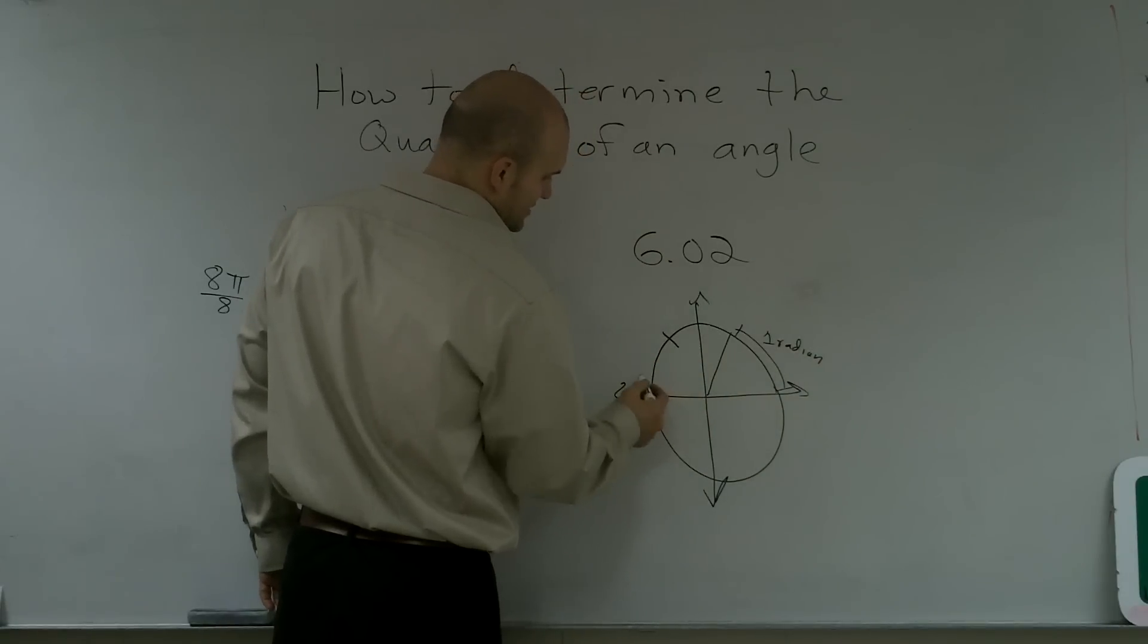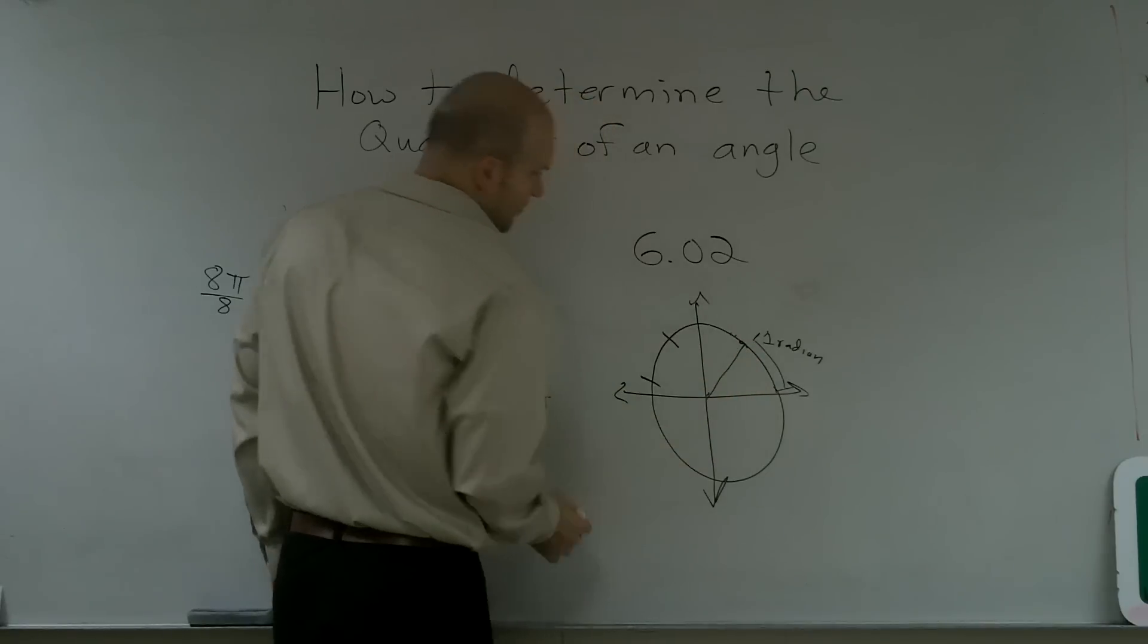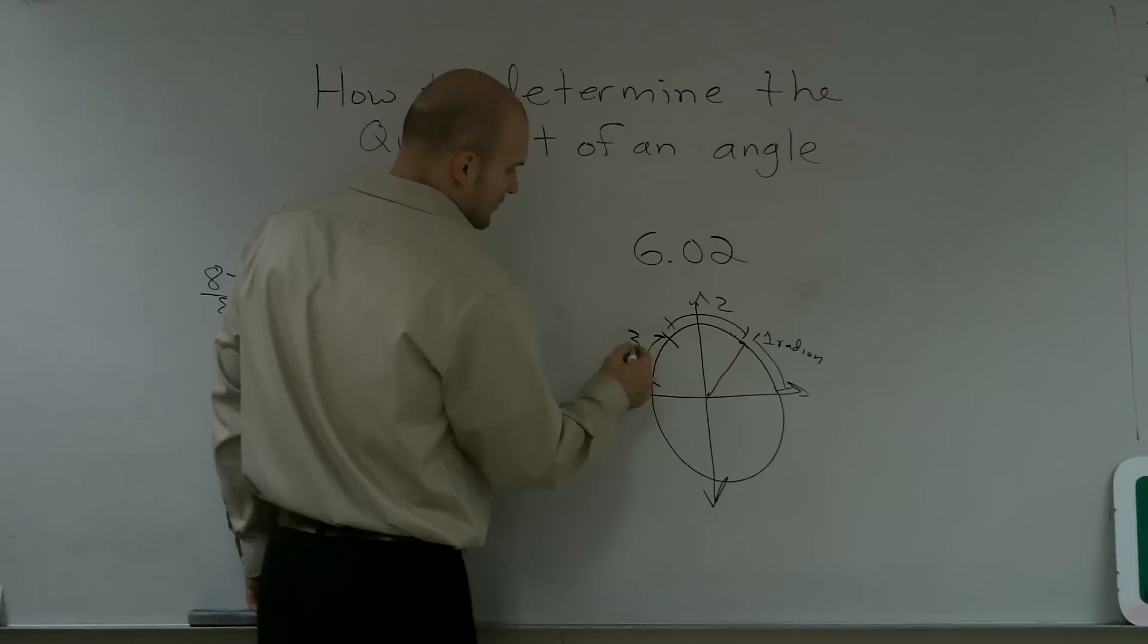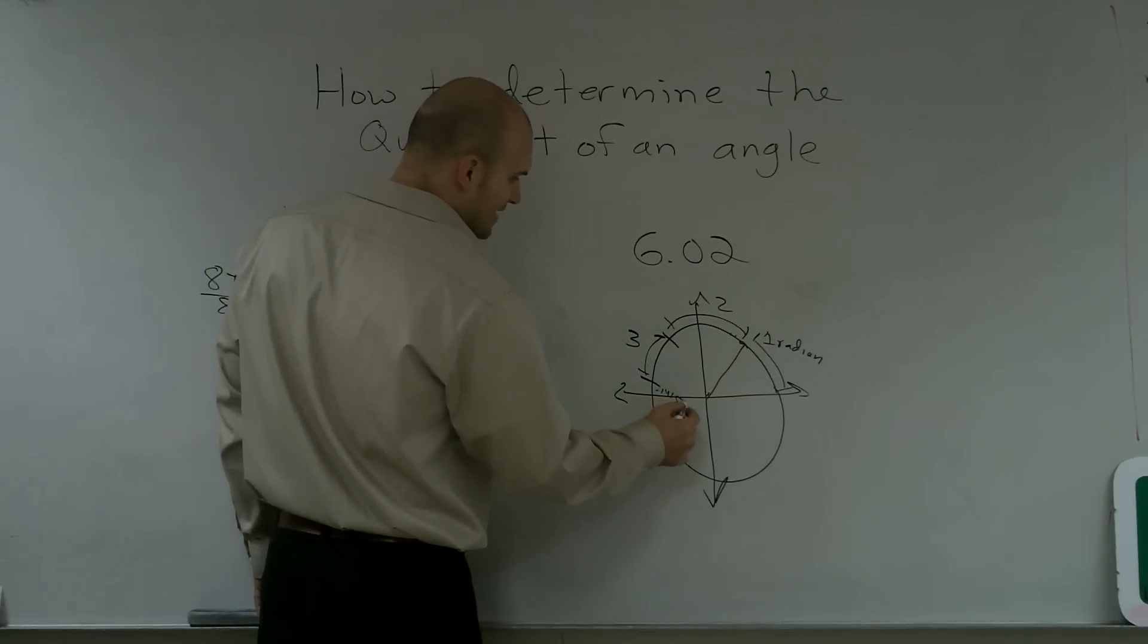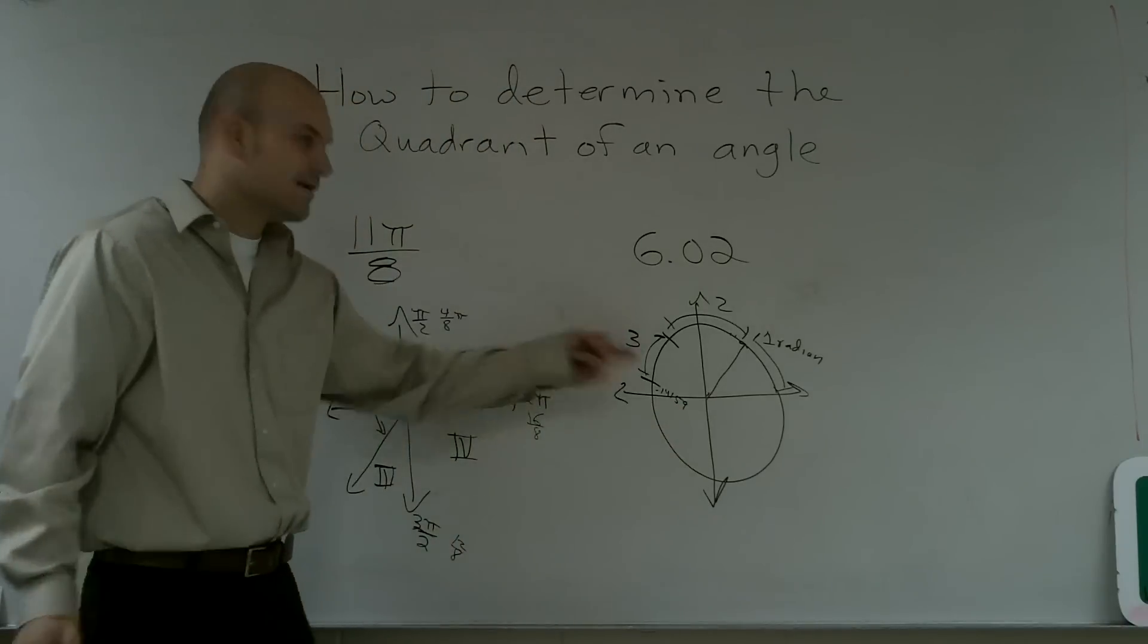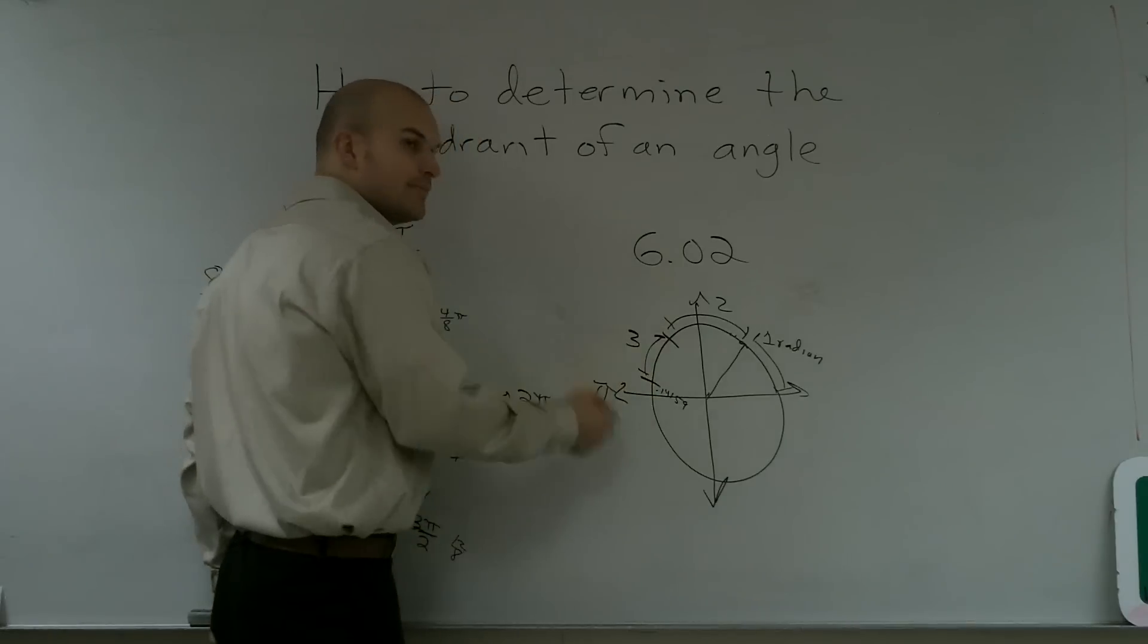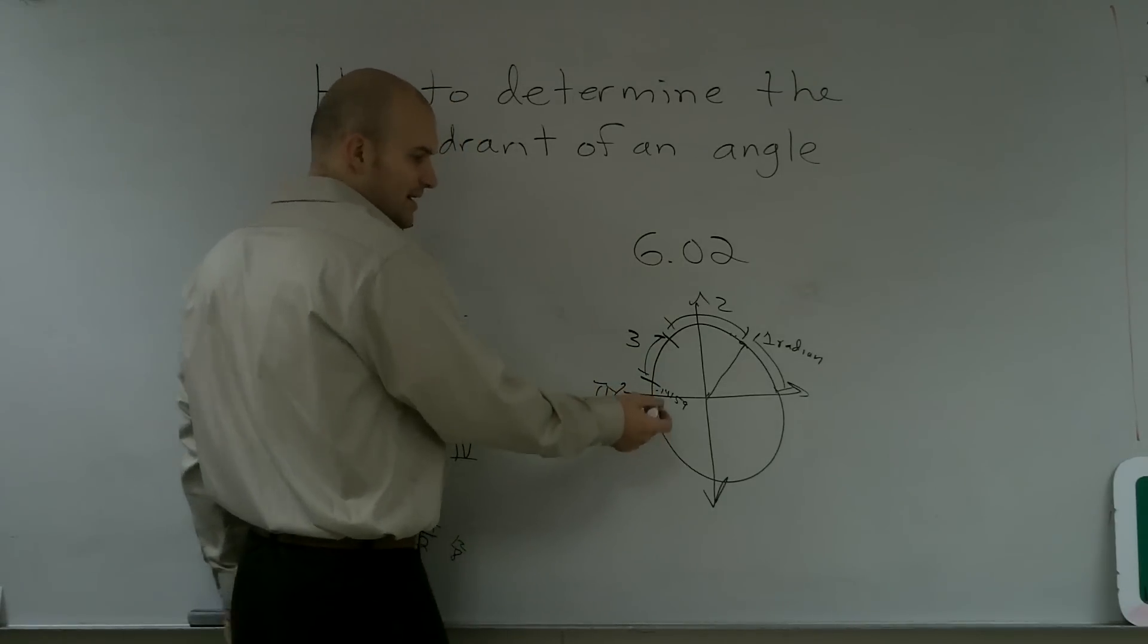And I've probably drawn this a little bit incorrectly. Probably should have been a little smaller. What you have is 1, 2 radians, 3 radians, and then 0.14159. That's π, right? That's how you get π. Because we say, from here to here, it's π. So it's 3.14159. So it's going to keep on continuing.